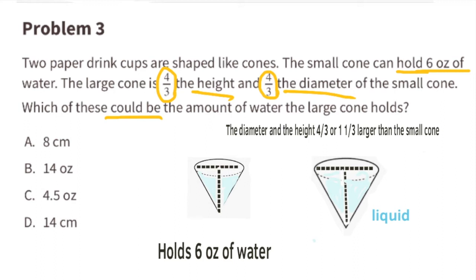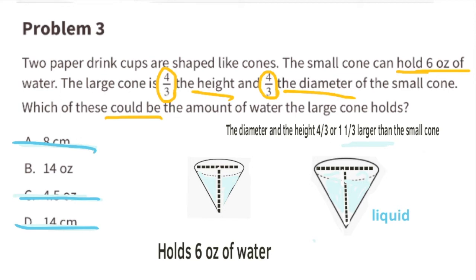Looking back at the question, it asks which of these could be the amount of water the large cone holds. Since the large cone is larger than the smaller cone, and the smaller cone holds 6 ounces, the answer must be more than 6 ounces. Choices A and D are measured in centimeters, which is a length unit, not volume. Choice C is 4.5 ounces, which is less than 6. So the only possible choice is B, 14 ounces.